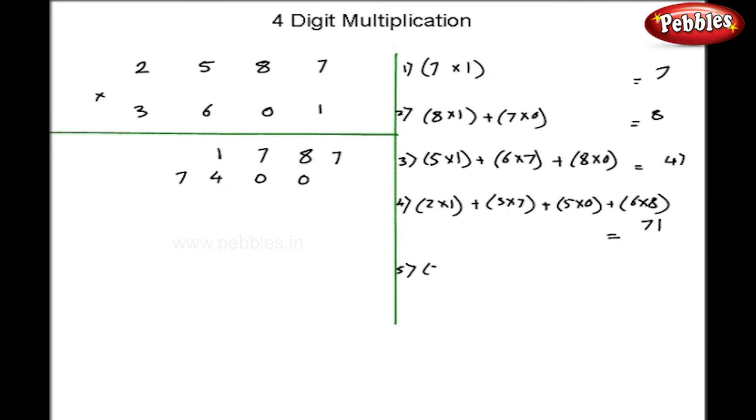As a next step, 2 into 0 plus 3 into 8 plus 5 into 6. I get 54. So, 5 is carry over and 4 in the first row.